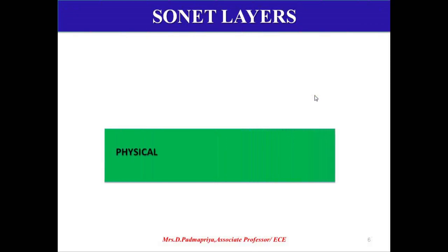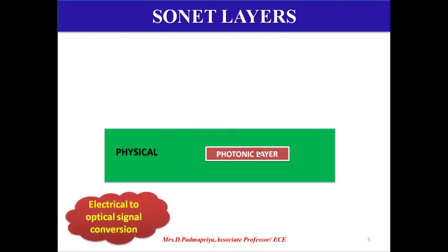The SONET layers consist of four layers. The bottommost layer is the photonic layer, which corresponds to the physical layer of the OSI model. It is responsible for conversion of electrical signals into optical signals. All devices of the SONET interact at the photonic layer. This layer is mainly concerned with the power level, pulse shape, and wavelength of light.